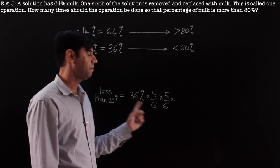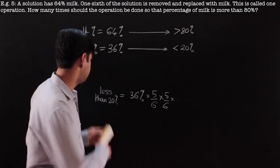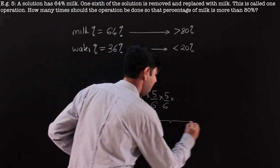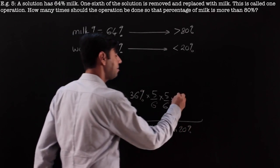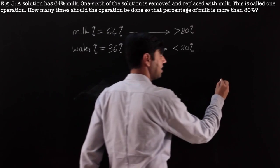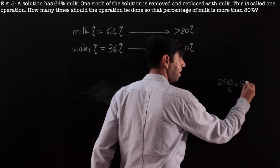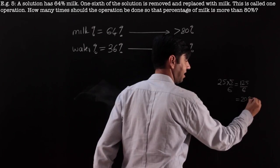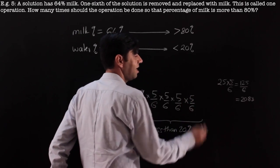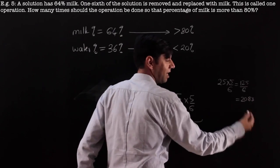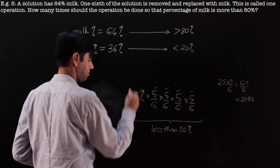Let's check: after 2 operations: 36 × (5/6)² = 36 × 25/36 = 25%. Still not less than 20%. After 3 operations: 25 × 5/6 = 125/6 ≈ 20.83%. Still not less than 20%. After 4 operations: 20.83 × 5/6 = 100/6 ≈ 16.67%. That is definitely less than 20%. So the operation must be done 4 times.